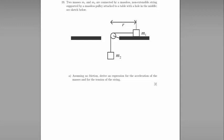Question 19. Two masses, M1 and M2, are connected by a massless, non-extensible string supported by a massless pulley attached to a table with a hole in the middle. Assuming no friction, derive an expression for the acceleration of the masses and for the tension of the string.